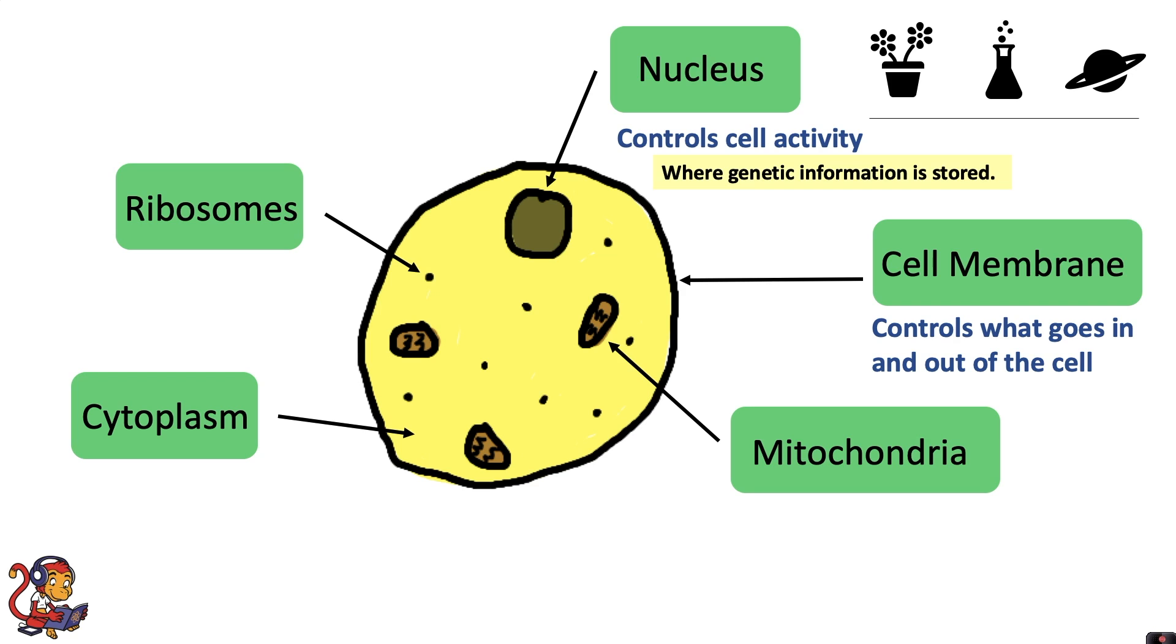The mitochondria are where respiration takes place. The cytoplasm is a jelly-like substance where chemical reactions take place. And finally the ribosomes are where proteins are made.